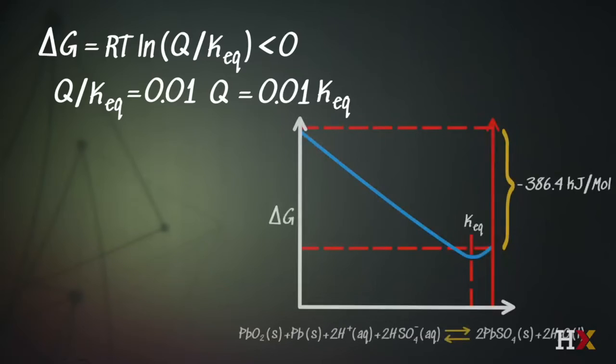Now let's work a couple of examples. Let's take the example of Q over K equilibrium equaling 0.01, or I can rewrite that as Q is equal to 0.01 times K equilibrium. And that tells me immediately where I'm sitting, that I'm sitting way over here to the left, fully charged. But what we want to calculate then is log of Q over the equilibrium constant, and when I do that, that's equal to minus 4.61.